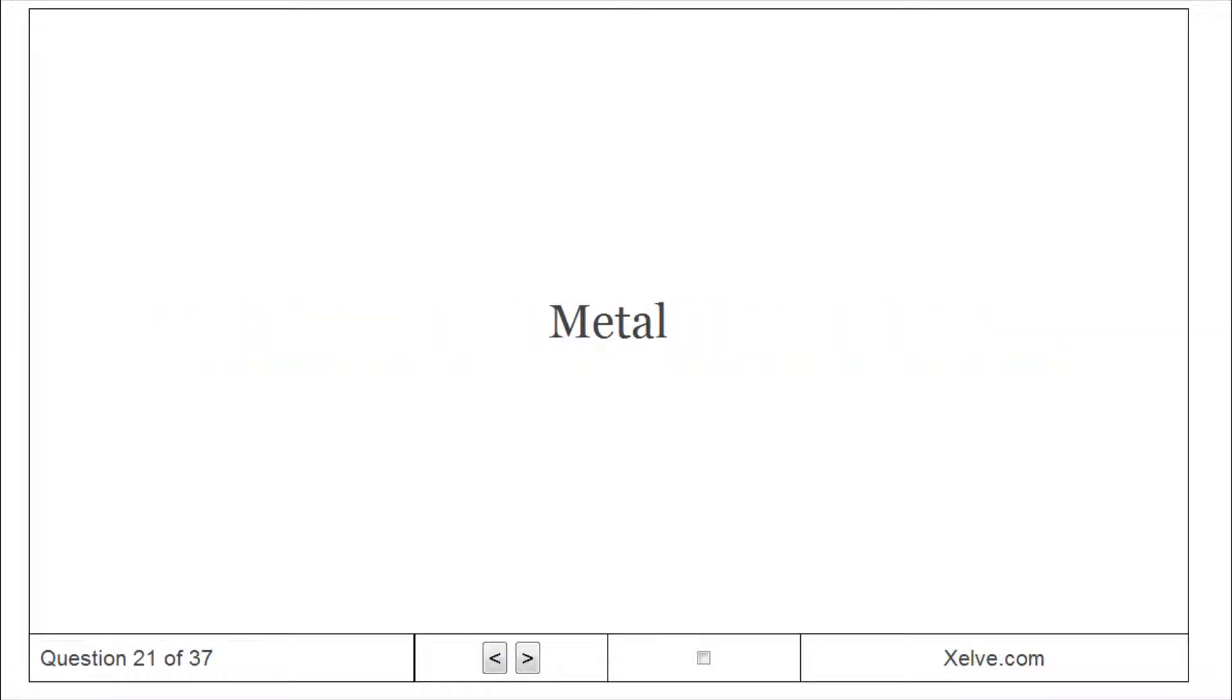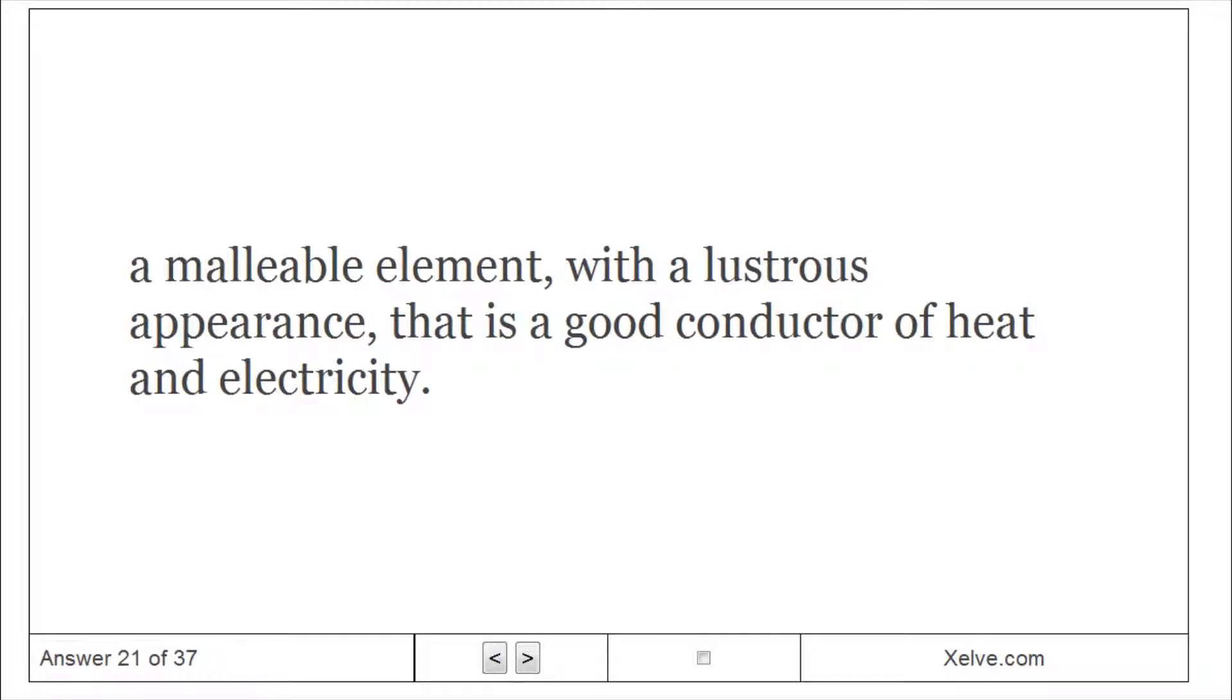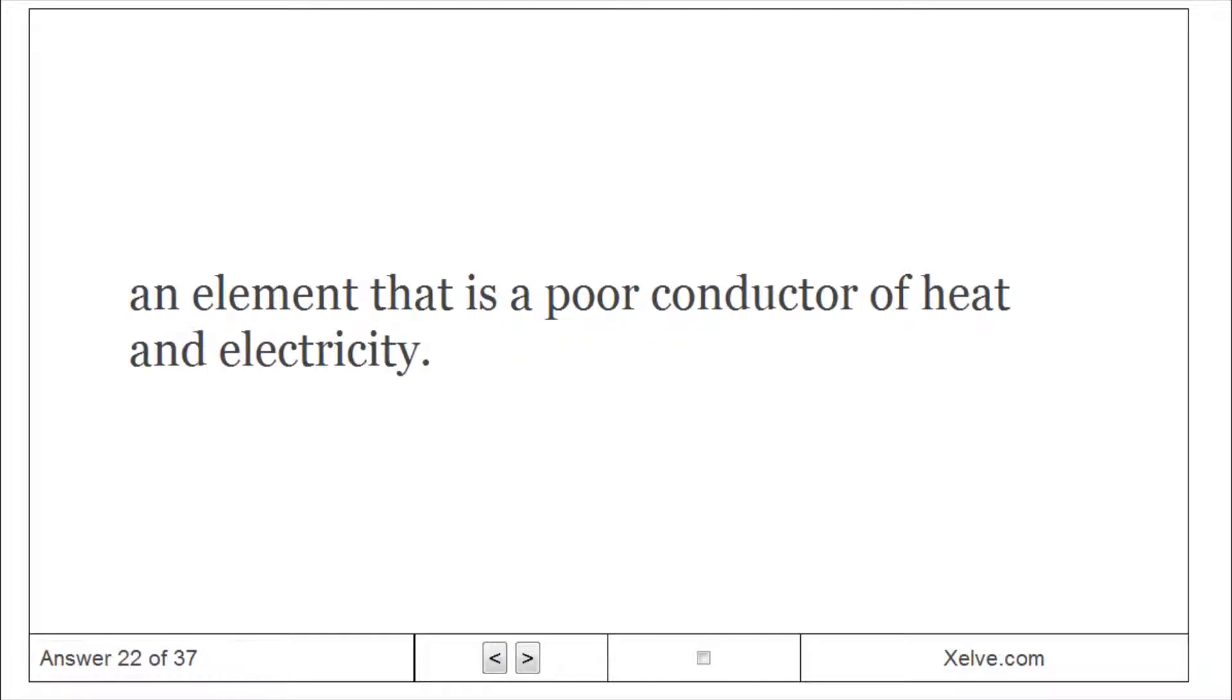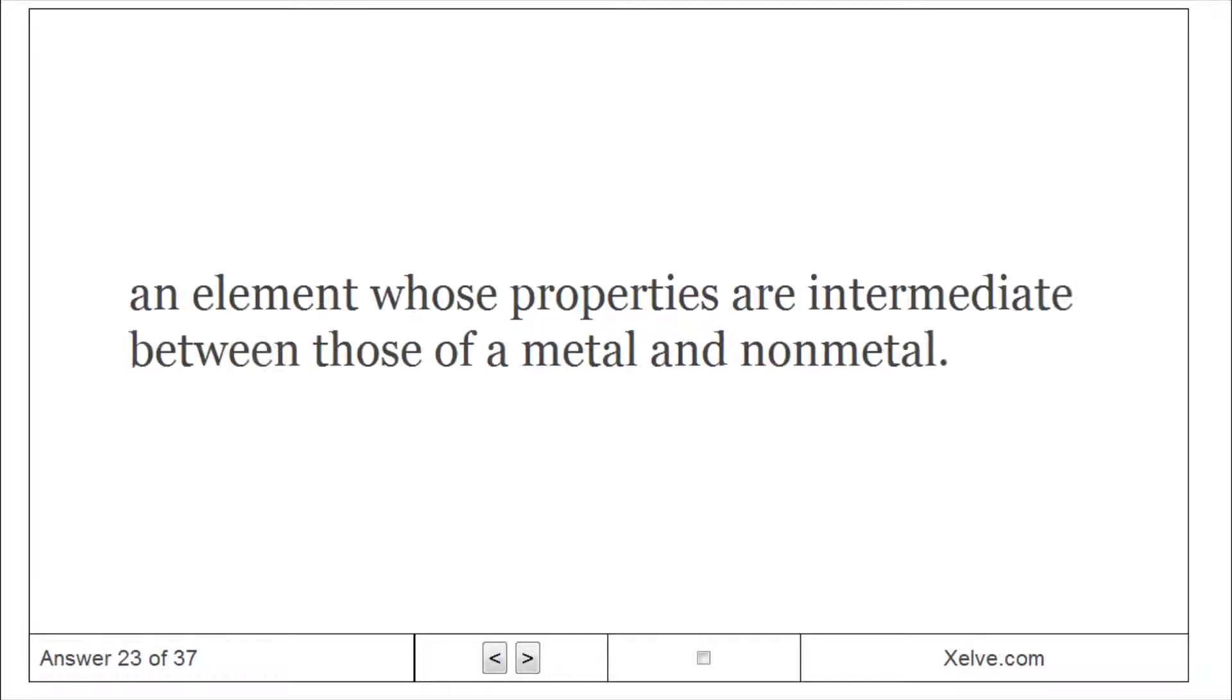Metal: A malleable element with a lustrous appearance that is a good conductor of heat and electricity. Non-metal: An element that is a poor conductor of heat and electricity. Metalloid: An element whose properties are intermediate between those of a metal and non-metal.